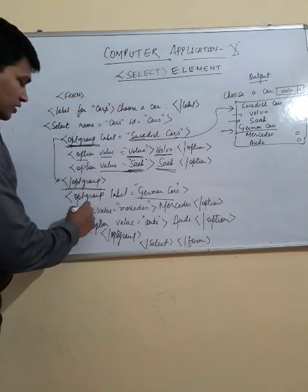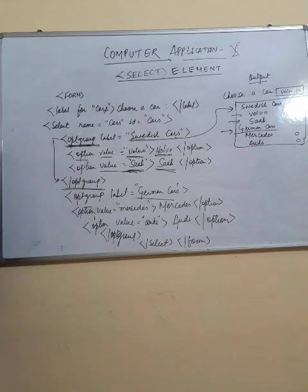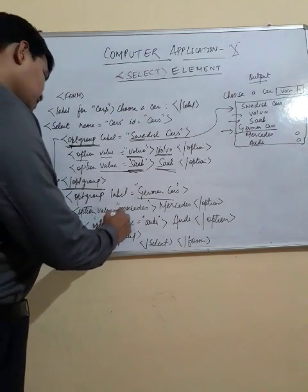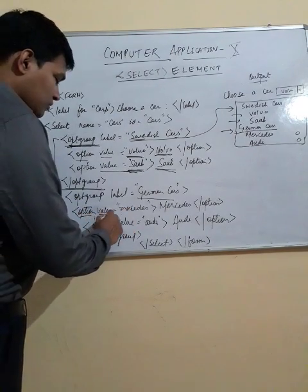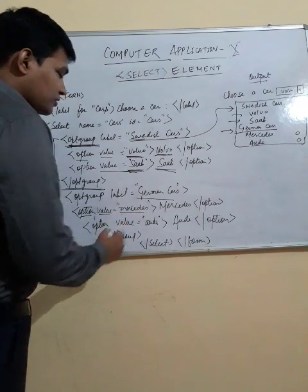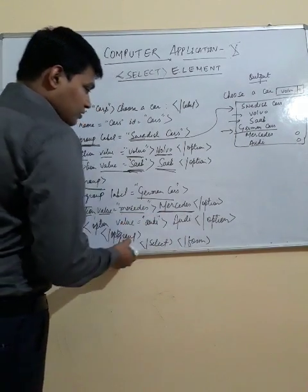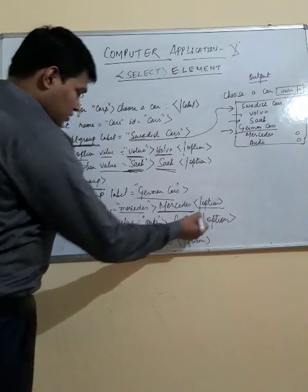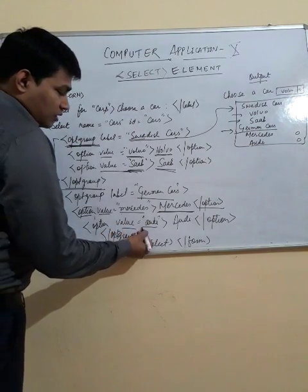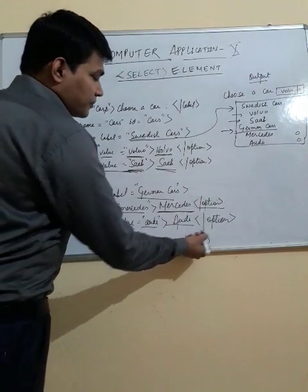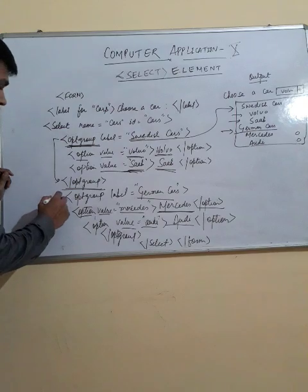In the same way, define the options of their elements in that group. The option value is 'Mercedes' and it will display Mercedes. Then another option creates 'Audi', which will display clearly, and the option tag closes. Whatever groups you want to create, you use the optgroup element.